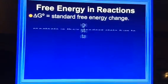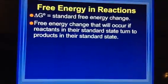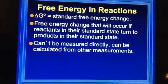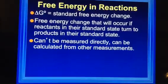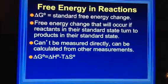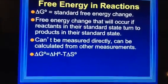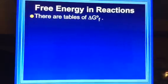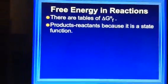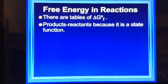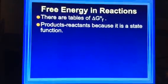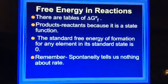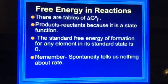Delta G-naught, standard free energy of change, that will occur reactants in their standard state turn to products in their standard state. Can't be measured directly. It can be calculated from other measurements. Delta G-naught equals delta H-naught minus delta T delta S-naught. Alright, so we're going to use Hess's law with known reactions. So there are also tables of delta G-naught of formation. But again, products minus reactants because it's a state function. Standard free energy of formation for any element in its standard state is zero. Spontaneity doesn't tell us anything about rate.